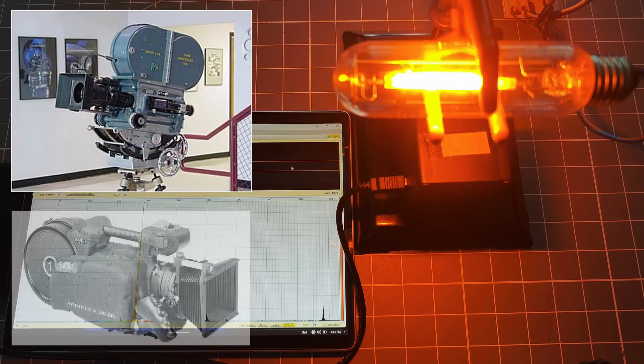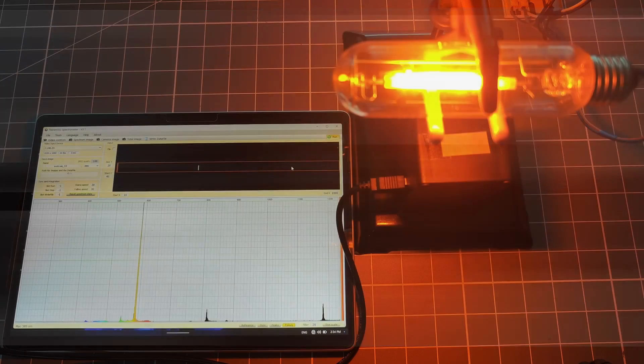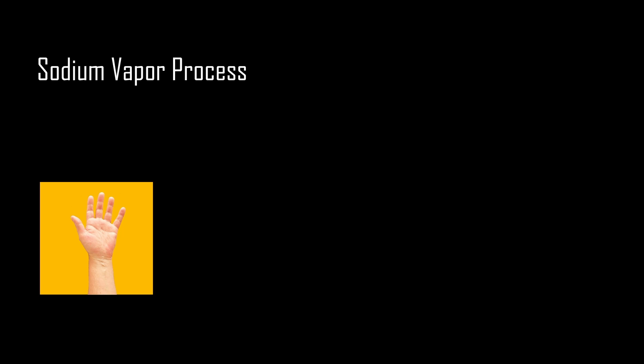The sodium vapor process is often called yellow screen. The sodium lamps are used to illuminate a white background screen, and white lights are used to illuminate foreground objects.